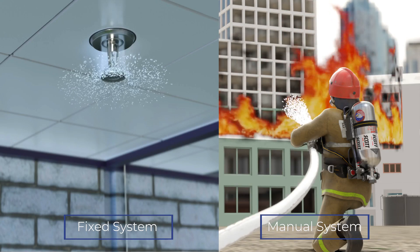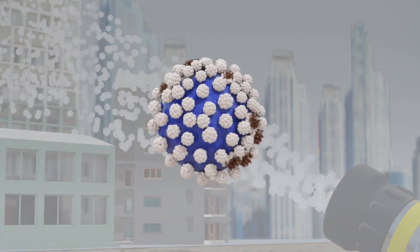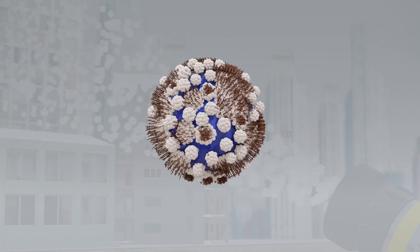Micelles travel towards and exit the nozzles forming EA droplets. Micelles nearest to the surface of each droplet automatically break apart.